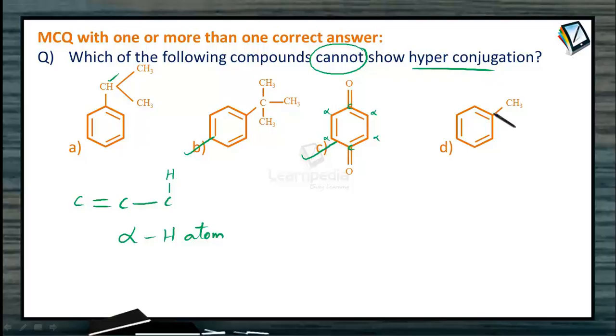Now see option D - this double bonded carbon is attached to a carbon having three hydrogens. So as there are alpha hydrogens, options A and D exhibit hyperconjugation, while B and C cannot show hyperconjugation.